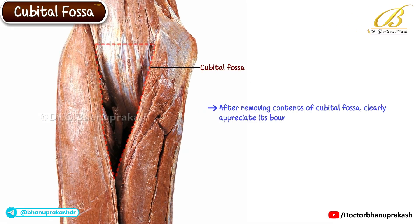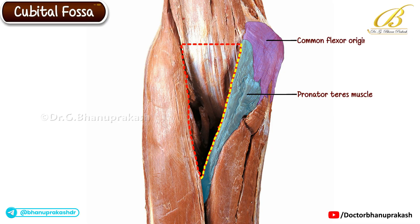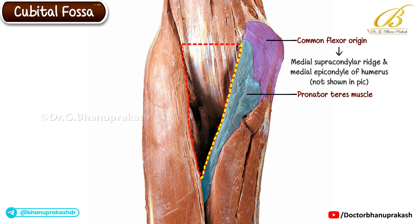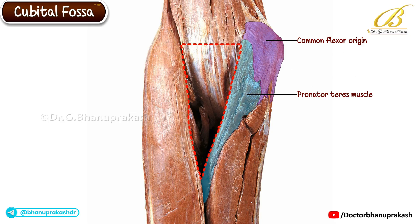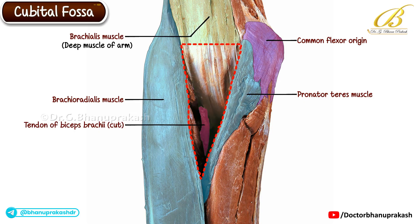After removing the contents of the cubital fossa, we can clearly appreciate its boundaries and the underlying muscular floor. The medial boundary is formed by the pronator teres muscle, which takes its origin partly from the common flexor origin on the medial supracondylar ridge and the medial epicondyle of the humerus. From here, the pronator teres runs obliquely towards the radial side, crossing the fossa to reach the lateral aspect of the forearm. On the lateral side, the boundary is formed by the brachioradialis muscle. With the biceps brachii now removed, only the cut end of its tendon can be seen lying deep within the fossa. Beneath it, the brachialis muscle is now well exposed — a deep muscle of the arm forming the upper part of the floor of the cubital fossa.